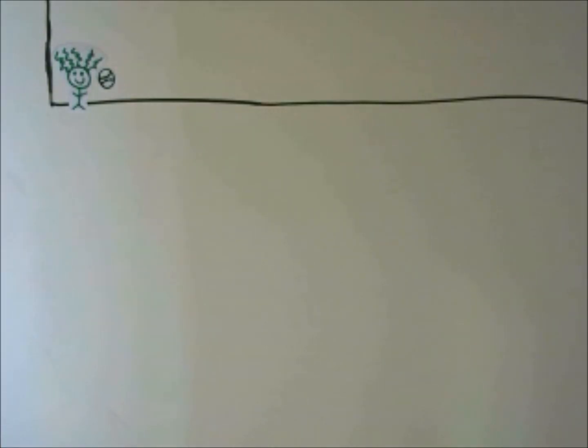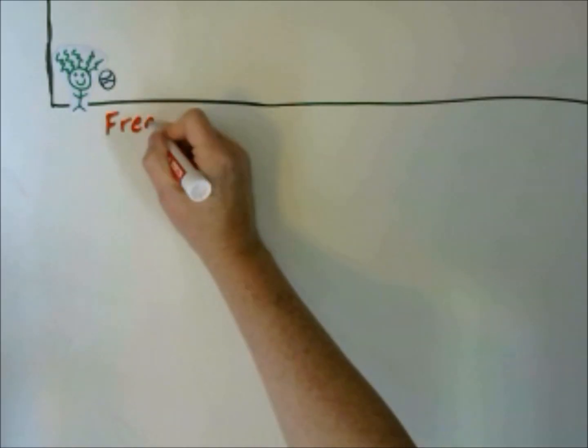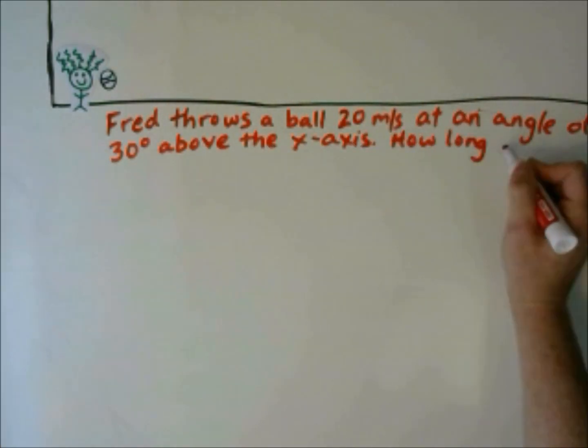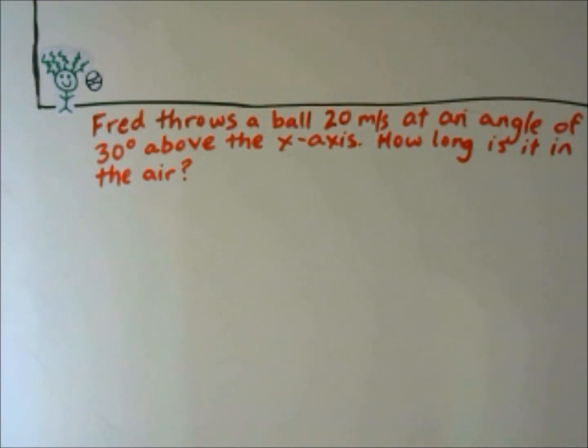Now Fred has gone to the bottom of the cliff and collected his baseball. He wants to see how long he can throw the ball and keep it in the air. Fred throws a ball at 20 meters per second at an angle of 30 degrees above the x-axis. How long is it in the air?